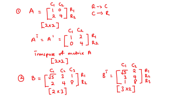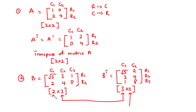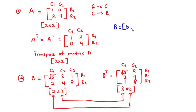What this primarily means is that the number of rows of the transpose matrix is equal to the number of columns of the given matrix. And also, the number of columns of the transpose matrix is equal to the number of rows of the given matrix. In general, given that B is an M by N matrix, we can find its transpose B superscript T.